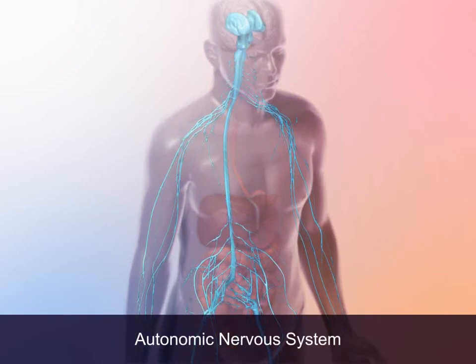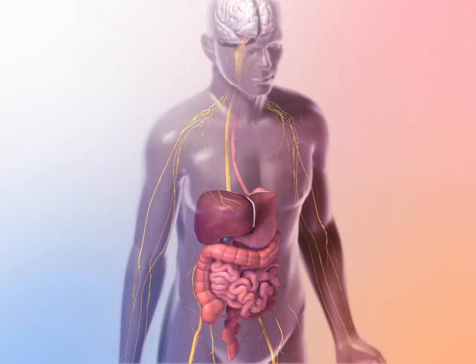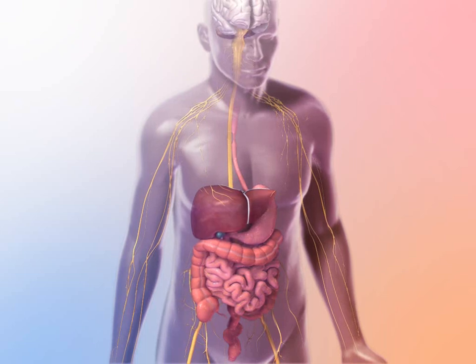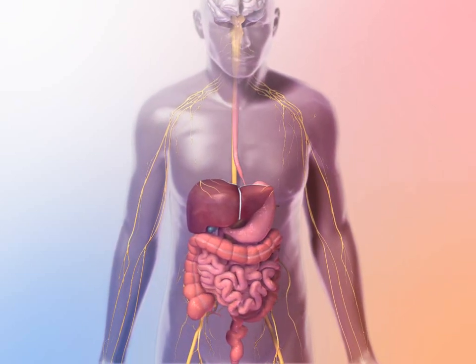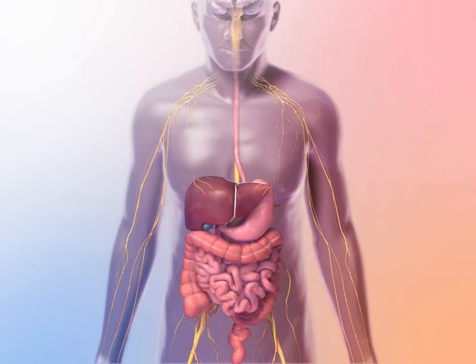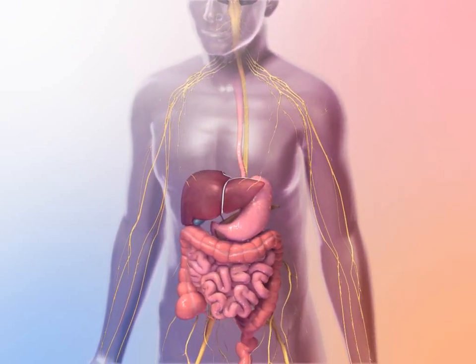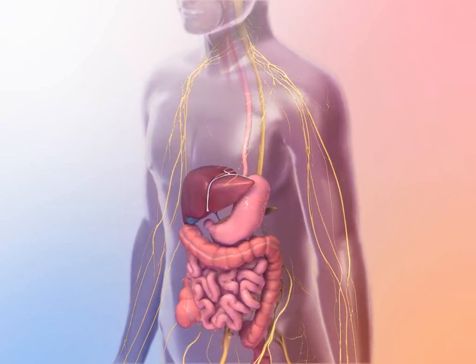The autonomic nervous system controls contractions of the alimentary canal that move swallowed food down the esophagus, churn the stomach, and move chyme through the small intestine and large intestine.